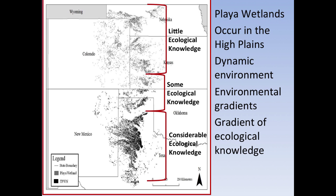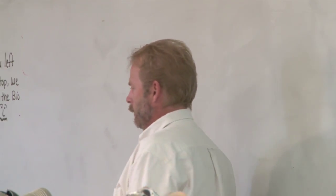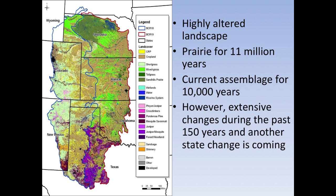There are environmental gradients east to west and a precipitation gradient north to south, as well as a temperature or growing season gradient. We also have a gradient of ecological knowledge. On the southern high plains, south of the Canadian River, we have considerable ecological knowledge of playas. In the central high plains, between the Arkansas River and the Canadian River, we have some knowledge. In the northern high plains, we have very little. The landscape has been a prairie for about 11 million years but has changed tremendously in the last 150 years.